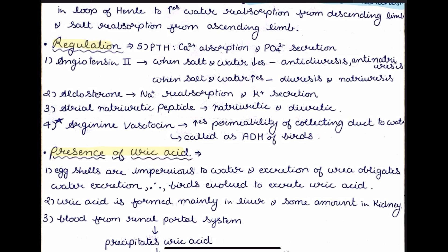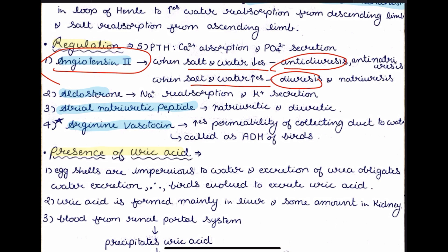In regulation, a few hormones are involved: parathyroid hormone is responsible for calcium absorption and phosphate secretion; we also have angiotensin 2, aldosterone, ANP (atrial natriuretic peptide), and arginine vasotocin. The functions of these hormones are very similar to those in mammals. Whenever salt and water concentration increases, angiotensin 2 causes diuresis and natriuresis; when it decreases, angiotensin 2 causes anti-diuresis and anti-natriuresis. These two contrasting functions of angiotensin 2 are commonly asked in exams.